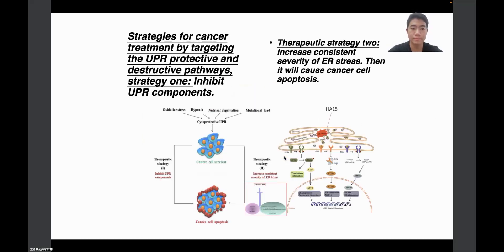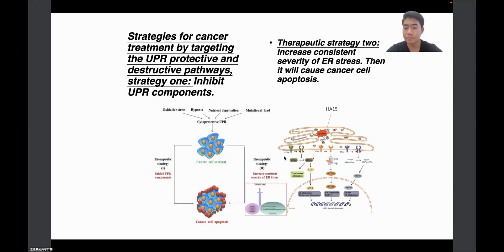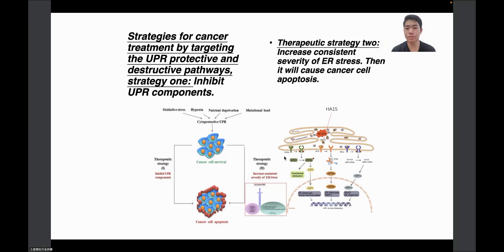There are two main strategies for cancer treatment by targeting the UPR-protective pathways. Target strategy one is to inhibit the UPR components. We know that UPR functions to release the cell from ER stress and prevent apoptosis. If we can inhibit the UPR components, that will make the ER stress too strong for the cell to survive, and the cell will die. Target strategy two is to increase the consistent severity of ER stress, which will also cause cancer cell apoptosis.